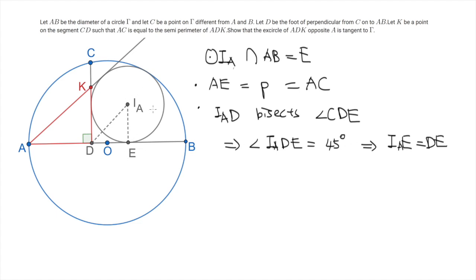So now we have a complete characterization of this excenter IA. And what it remains to prove is that OIA, the distance between O and IA, equals R minus RA. So here the capital R represents the radius of the big circle gamma, and RA is the radius of the excircle. Then now we introduce some coordinate system and we can evaluate these terms one by one.